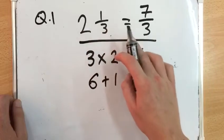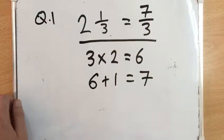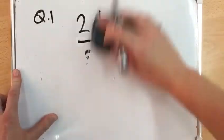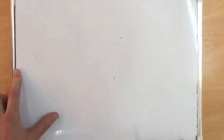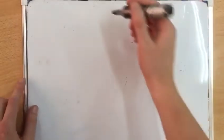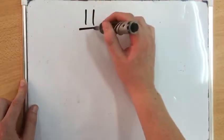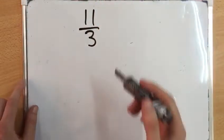Today we are also going to learn about changing from improper fractions back to mixed numbers. Let's look at an example. Let's look at 11/3. How we do this is we divide 11 by 3.